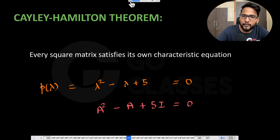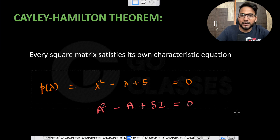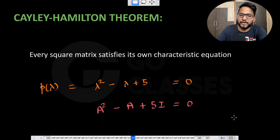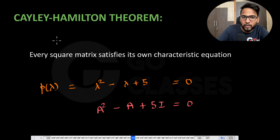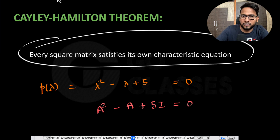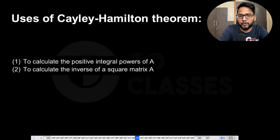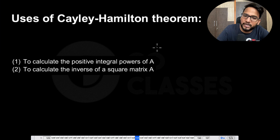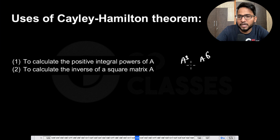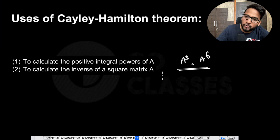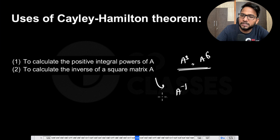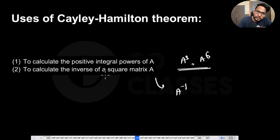Every square matrix satisfies its own characteristic equation. We will be using this theorem to find positive integral powers of A — like A^5, A^6 — and also to find A inverse using this particular theorem.